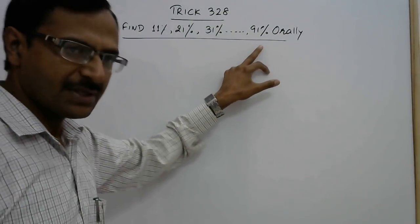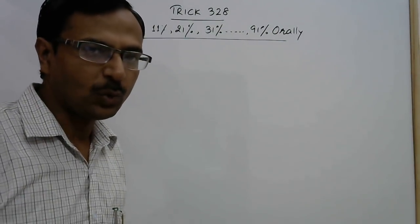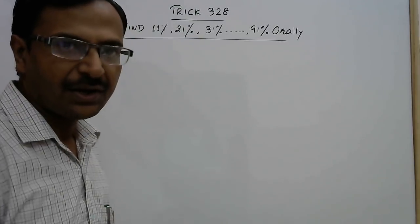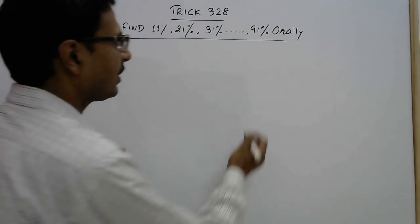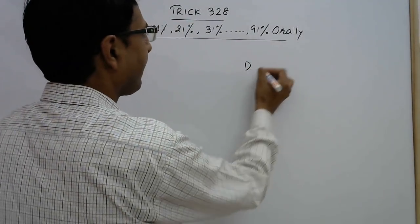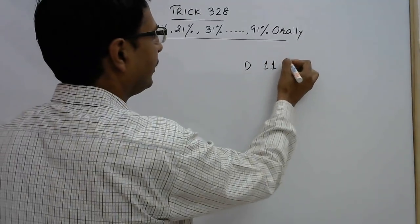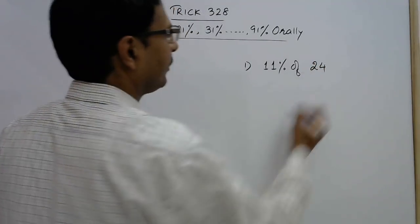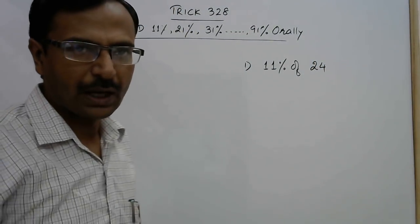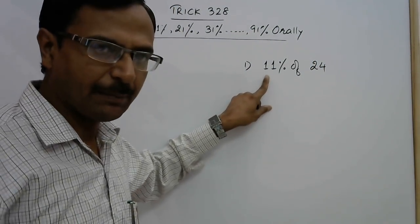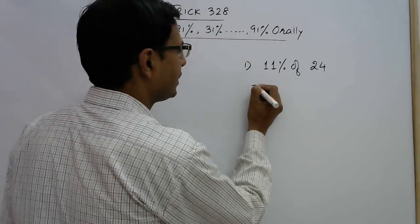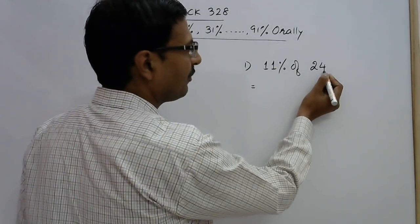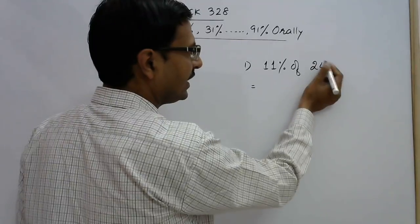So up to 91 percent of any number you can find orally using this trick. Now for this let me take a simple example of 11 percent of say any number, you have 24. Now see whenever you have to calculate 11 percent of any number, just put a decimal one digit from the right side in this number, so one digit from the right side the number becomes 2.4.